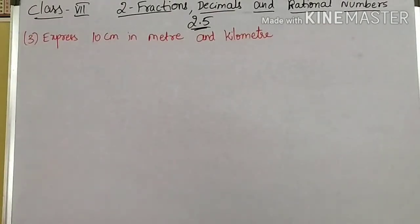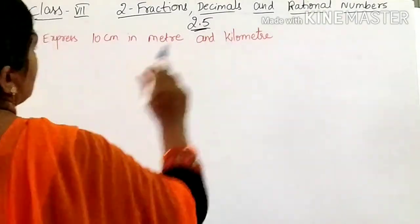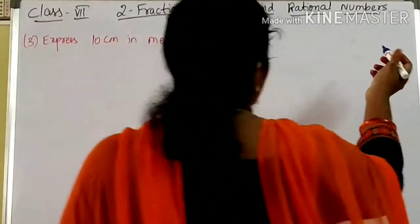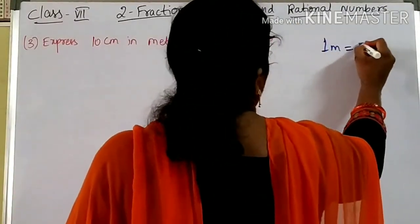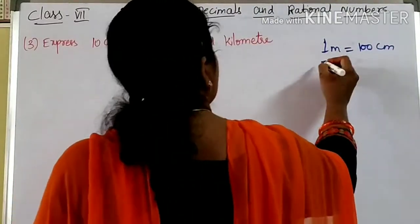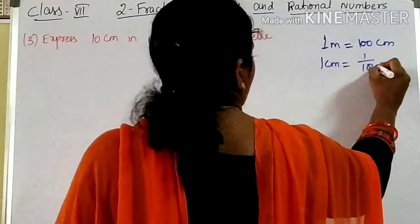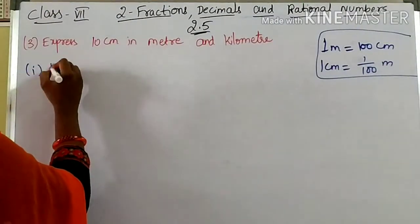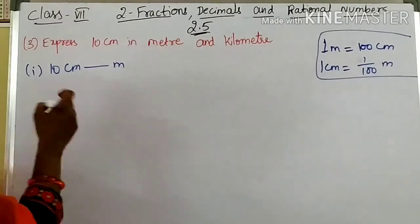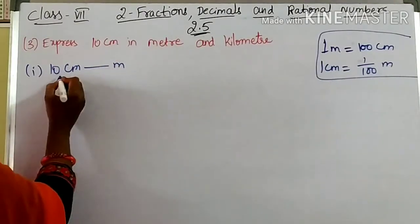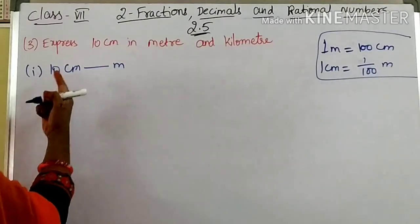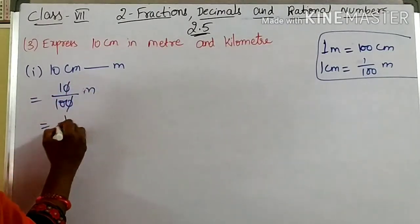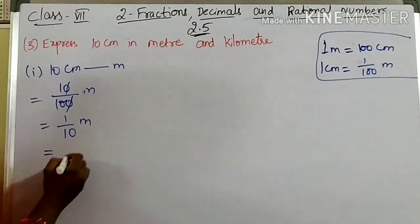Coming to the third question: Express 10 centimeters in meters and kilometers. You know that 1 meter is nothing but 100 centimeters. So 1 centimeter is 1/100 meters. For the first part, I am going to convert 10 centimeters into meters. 1 centimeter is 1/100 meters, so 10 centimeters is nothing but 10/100 meters. You cancel a zero, you get 1/10 meter. 1/10 means 0.1 meter.